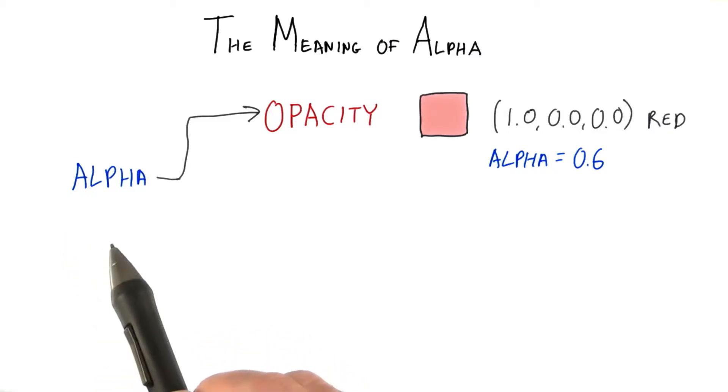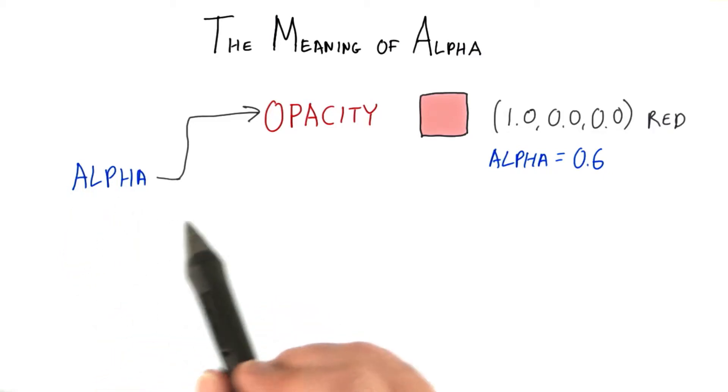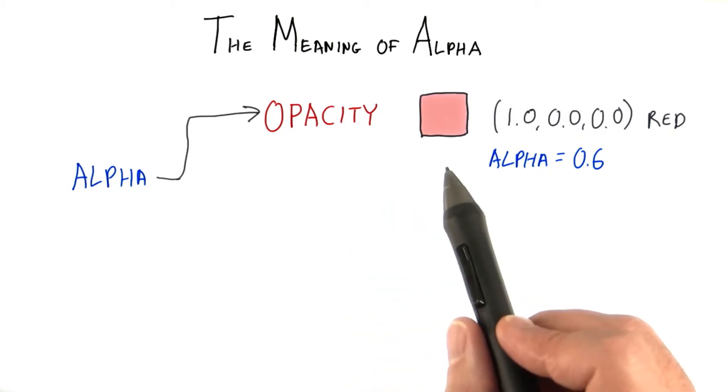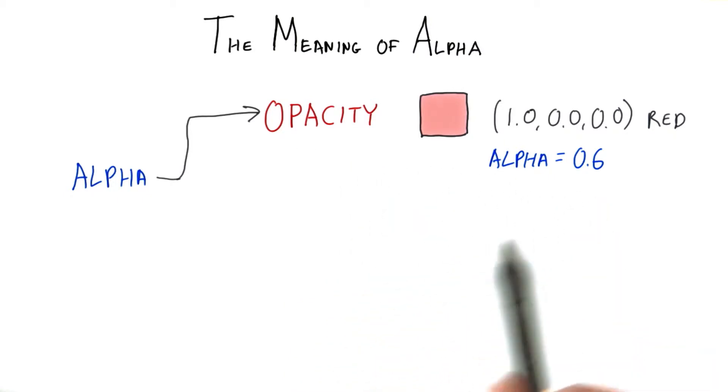When using transparency for materials, we set the color's alpha value to specify an object's opacity. You might have a red material and the alpha is used to make it semi-transparent.